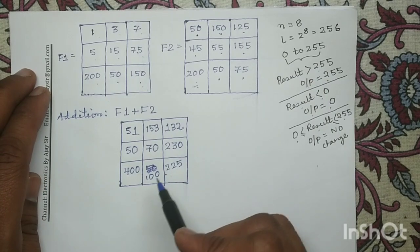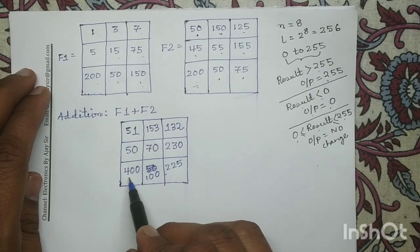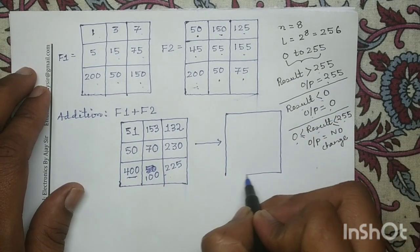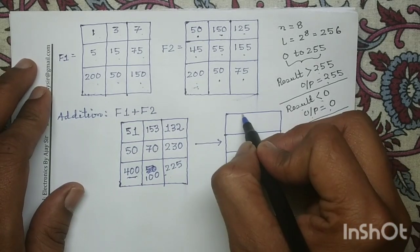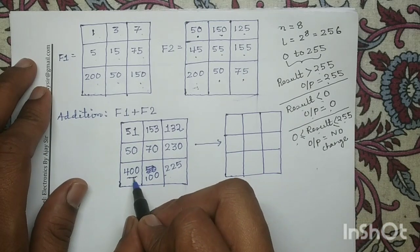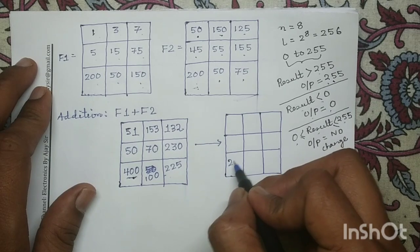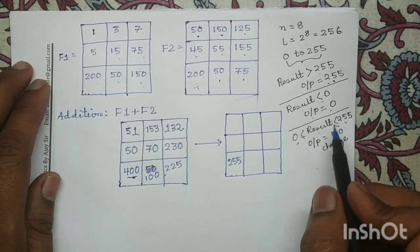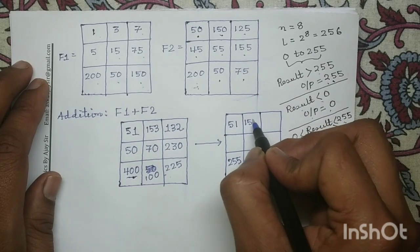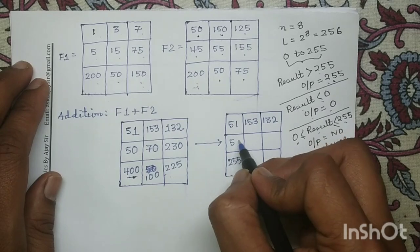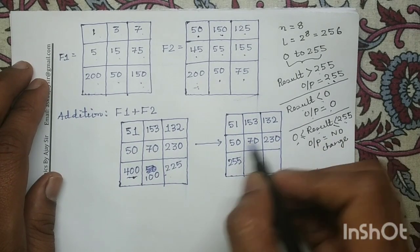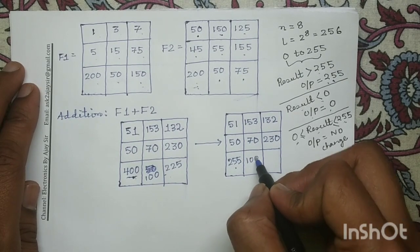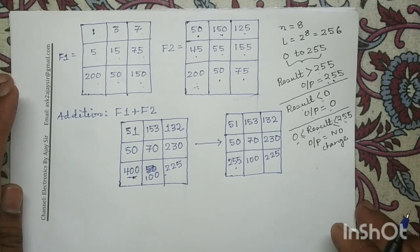In the output image of addition operation f1 plus f2, we check whether any number exceeds the limit 255. We find only one pixel value above 255 — that is 400 — so in the output image we assign the intensity level 255. The rest of the pixel values lie in the range 0 to 255 with no change. So the output image is: first row 51, 153, 132; second row 50, 70, 230, 255; third row 100, 225.